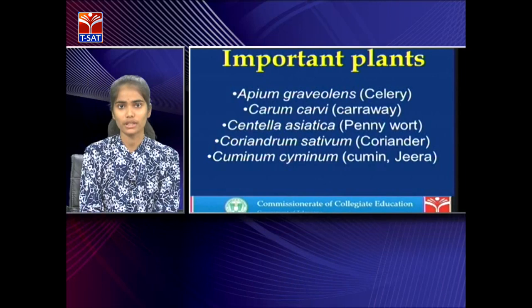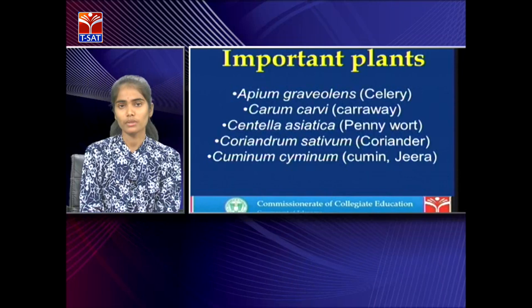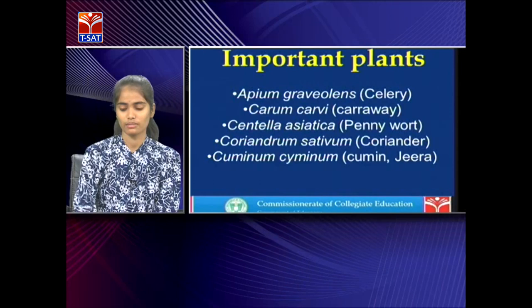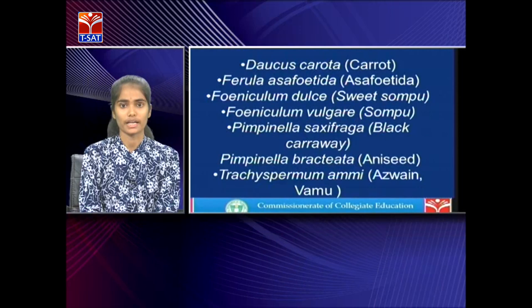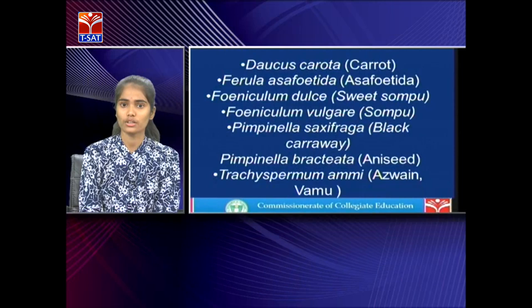Important plants of Apaceae include: Apium graveolens (celery), Carum carvi (caraway), Centella asiatica (pennywort), Coriandrum sativum (coriander), Cuminum cyminum (jeera), Daucus carota (carrot), Ferula asafoetida (hing), Foeniculum dulce (sweet saunf), Foeniculum vulgare (saunf), Pimpinella saxifraga (black caraway), Pimpinella bracteata (anise seeds), and Trachyspermum ammi (ajwain).